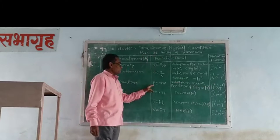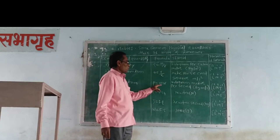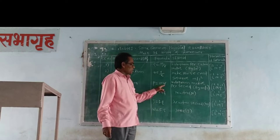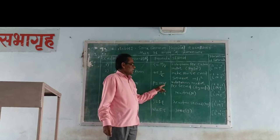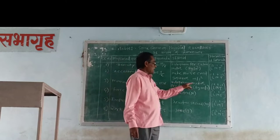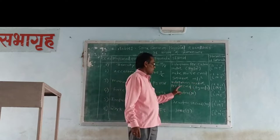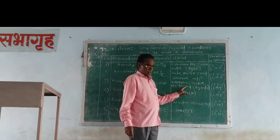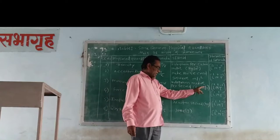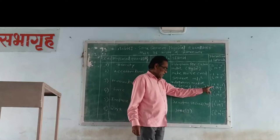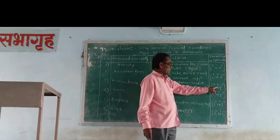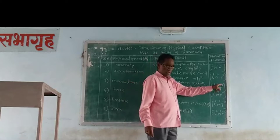Third, momentum. P is equal to mass into velocity. The unit is kilogram meter per second, and the dimensions are L1 M1 T minus 1.